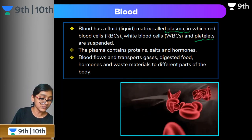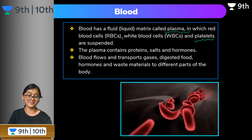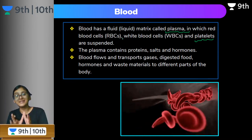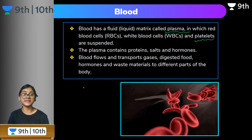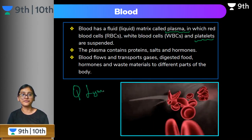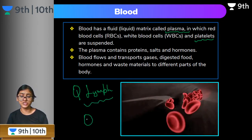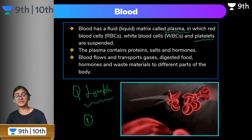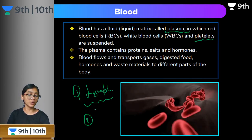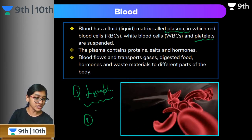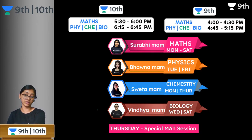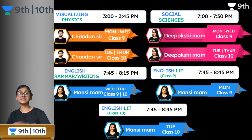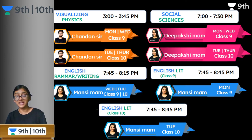Blood flows and transports gases, digested food, and waste materials to different parts of the body. So we have covered: areolar and adipose tissue (loose connective tissue), tendons and ligaments (dense connective tissue), bone and cartilage (skeletal connective tissue), and blood (fluid connective tissue). The homework question is: what is lymph? Lymph has a similar but not identical composition to blood — answer in the comment section. This is a very important one-mark question, expected even in 10th standard.